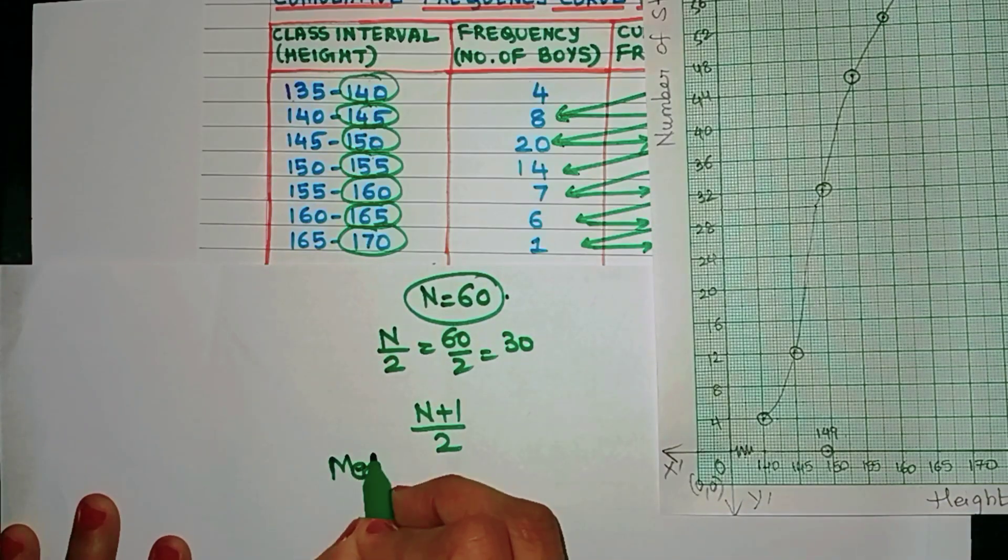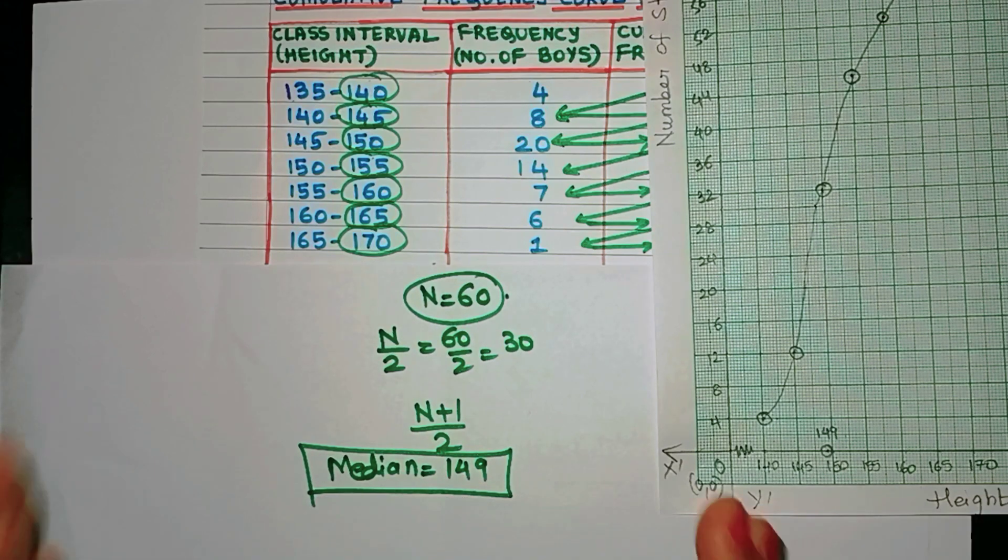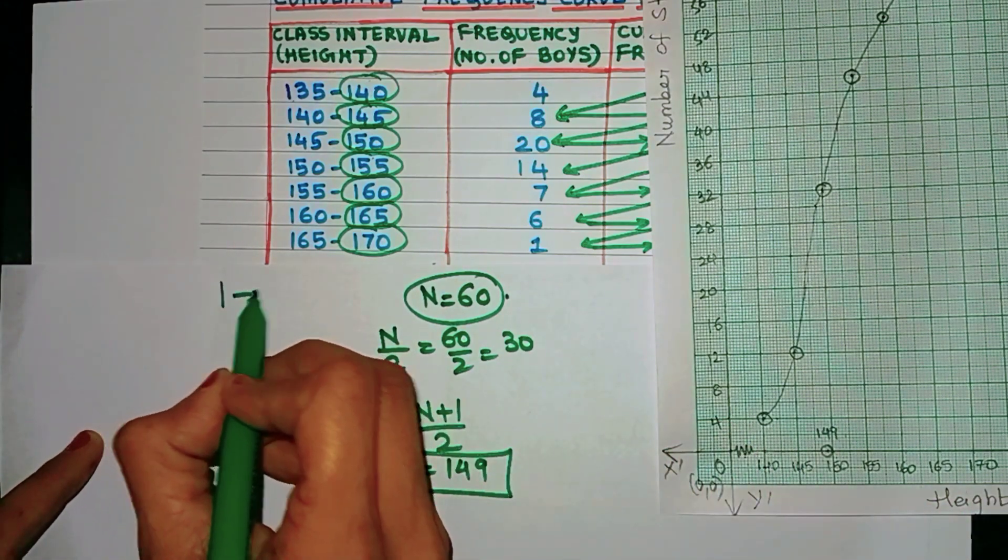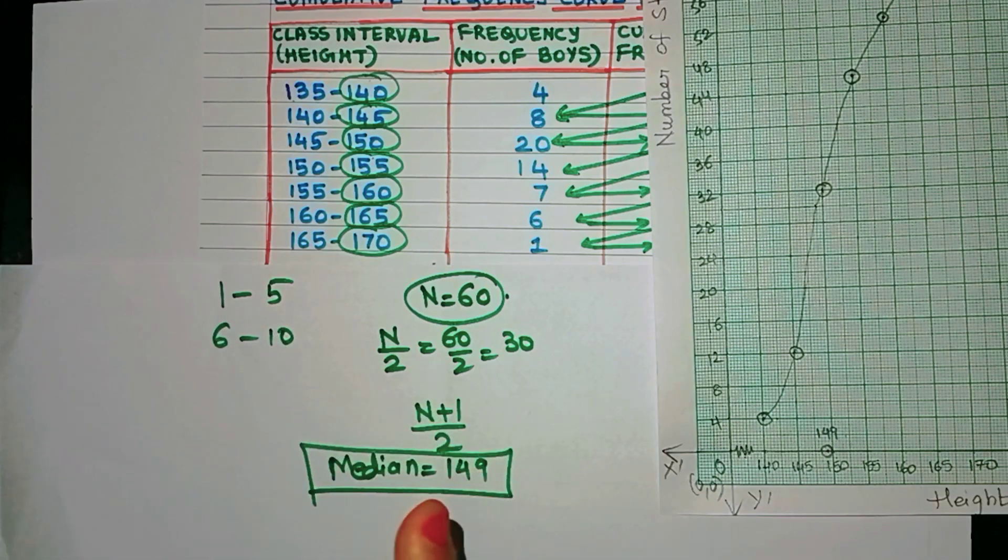When it reaches this point over here, this comes out to be around 149. This is the median value. Very easy to find out. So the median that we got here from the curve is 149. Now in case your class intervals are inclusive class intervals, for example 1 to 5, 6 to 10, you have to first convert it into exclusive class intervals and then plot the frequency curve.